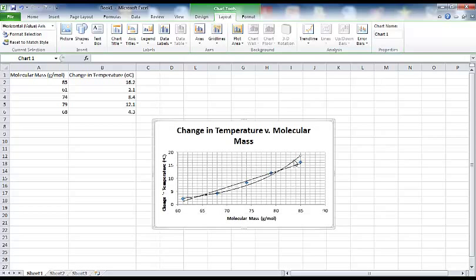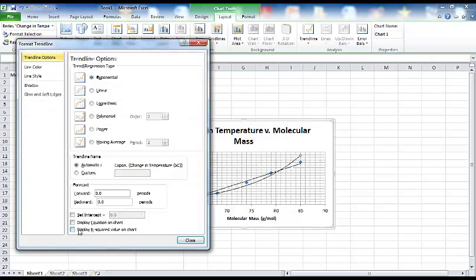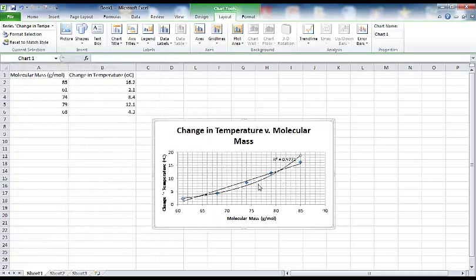To figure that out, you can select the trend line and right click so you get the menu. And format trend line is the option you'd like. Display the R squared value on the chart is what we like to do. So what that's doing is telling us how good of a fit these data are. The closer the R squared value is to 1, it tells us there's a better fit for the data to that line.